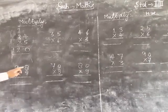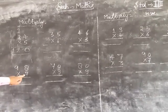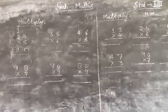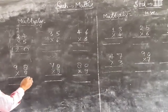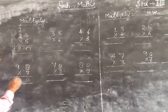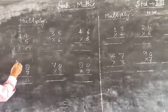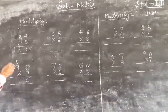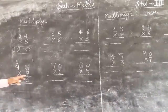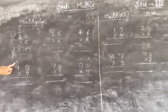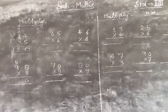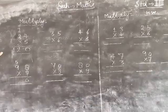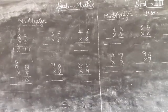Next, 98 x 7. 7 x 8 is 56, write 6, carry 5. 7 x 9 is 63, plus 5 is 68. Answer: 686.